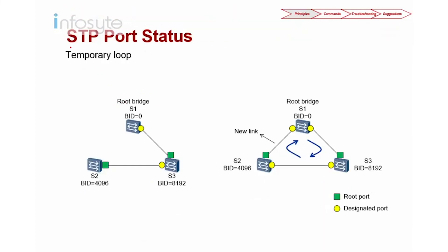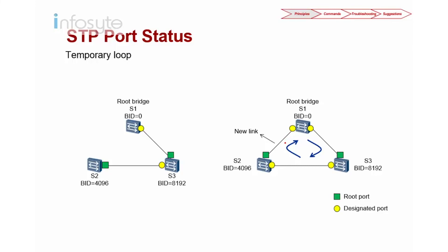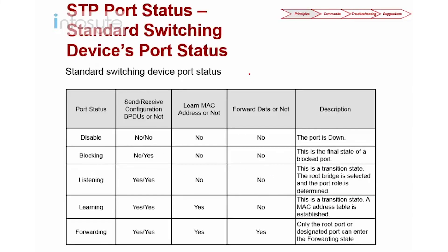Under normal circumstances, even when running STP, we still have a temporary loop. For example, on a topology with three switches and no redundant links, STP is still running with designated ports and root ports. Now assuming I add a new link, things will be different. Once you add a new link, STP will kick in, but it's not instantaneous — it will not immediately know whether this port should be forwarding or blocked. It needs to go through the calculation, so in this brief period of time there will be a temporary loop, which is quite normal. This leads us to the next topic: device port status.